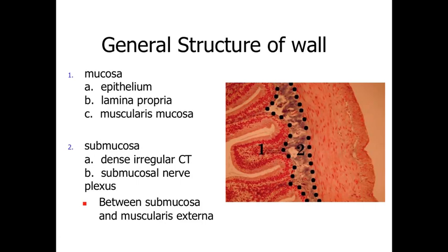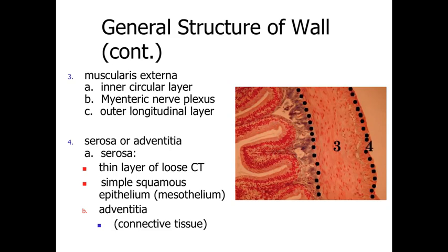Underlying the mucosa, essentially underneath the muscularis mucosa, is the submucosa — named for being under the mucosa. This is a more dense, irregular connective tissue, and it is the location for the submucosal nerve plexus, situated between the mucosa and the underlying region.